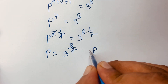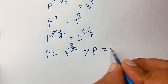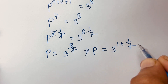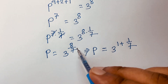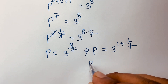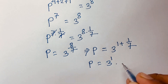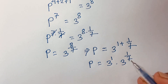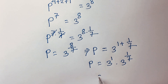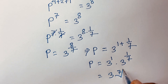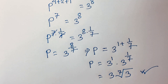So p equals 3 to the power of 1 plus 1 over 7, since 1 plus 1 over 7 equals 8 over 7. By exponential rules, p equals 3 to the power 1 times 3 to the power 1 over 7, which equals 3 times the 7th root of 3. This is our final answer — the value of p.